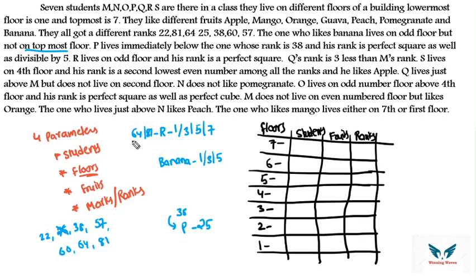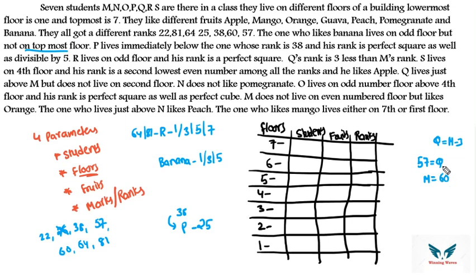Q's rank is three less than M's rank, so Q = M − 3. Looking at the remaining marks, 57 and 60 have a difference of three and neither is 25, so Q's rank is 57 and M's rank is 60. S lives on the fourth floor — direct statement, fill that in the table.